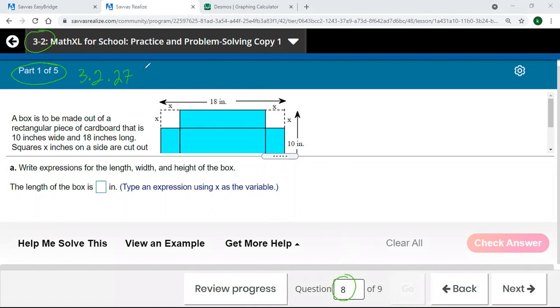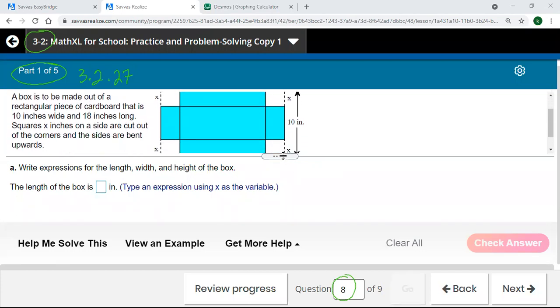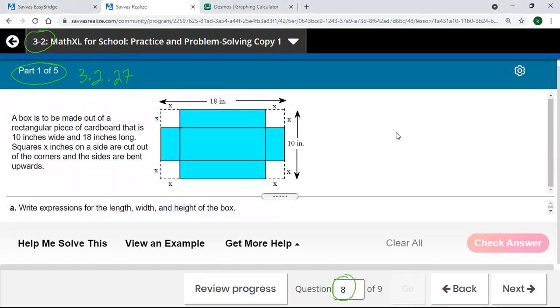So this is a classic algebra problem here. You guys, we have this rectangle. Let's see if I can pull this down so we can see a little more there. Okay, and we're going to have a big rectangle that's 18 inches by 10 inches, and then you got to cut the corners out so you can fold it up into this rectangular prism. A box is to be cut and then the corners, you cut these corners out so that the sides fold up.